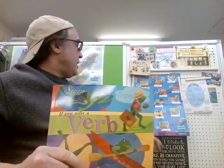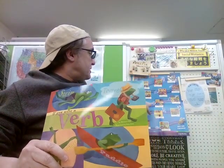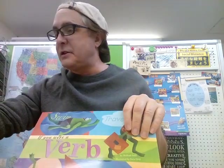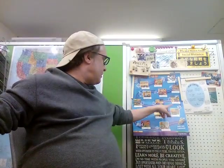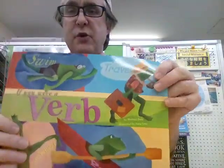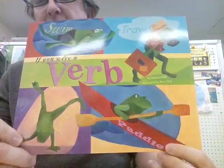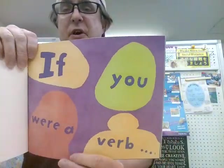Today we're going to do If You Were a Verb. So far we've done capillary, period, alliteration, and noun. Next week will be adjectives, so don't forget to come back next week. So today, if you were a verb, let's see — there are some verbs already here: swim, travel, cartwheel, and paddle. If you were a verb, what would you be? Don't forget to like before I start, so we know you're enjoying these videos.